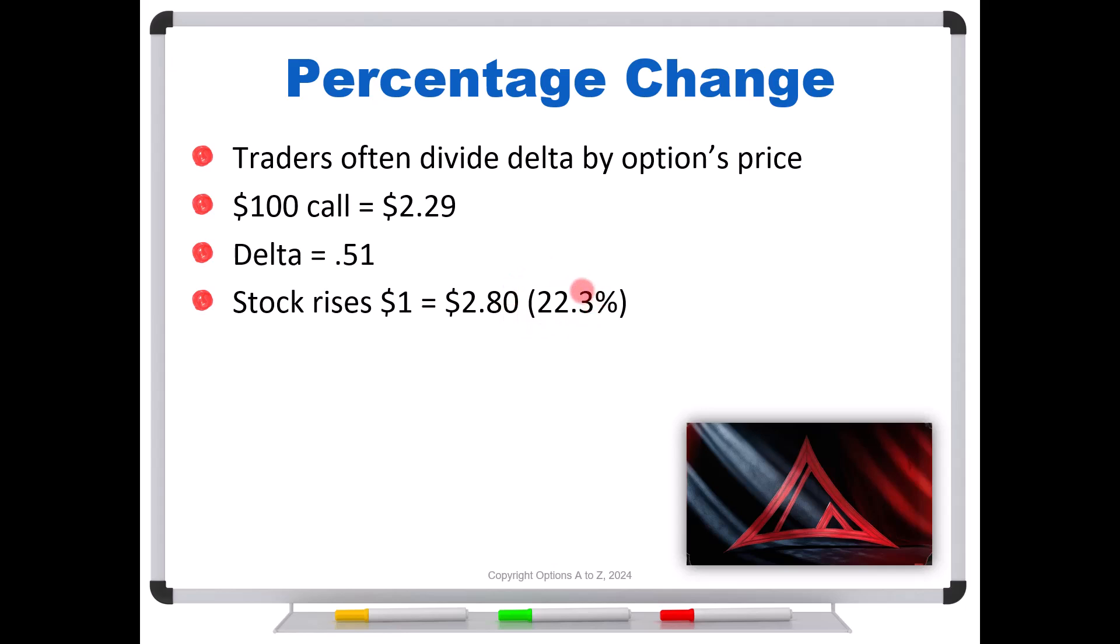And so again, this is what he was saying. If that's true, why can't we just take delta divided by the call's price? And that will also give us the same answer. And it does. We take 51 cents divided by 229, and we get exactly 22.3.